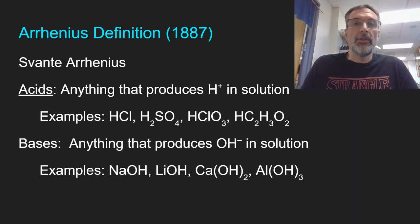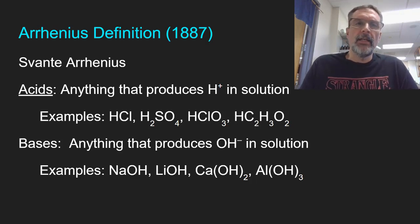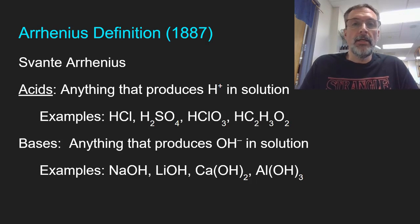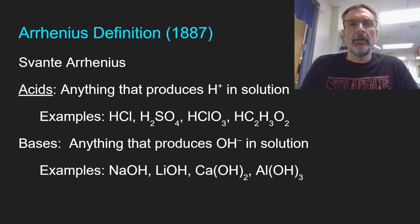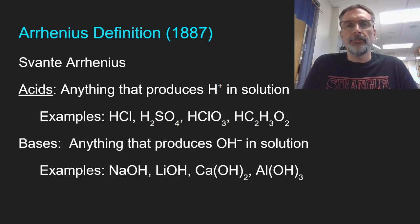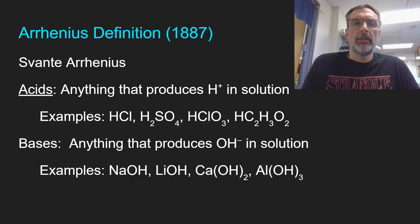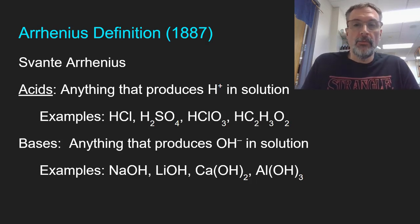We're going to start with the Arrhenius definition. Back in the 19th century, Svante Arrhenius, who was a Swedish chemist, did experiments around acids and bases. The words acids and alkali — which is what we used to call bases — were used quite commonly, but what Arrhenius wanted to do was really come up with a definition that would describe what was going on.